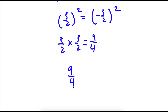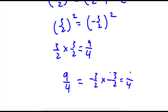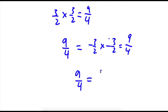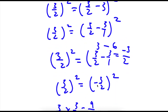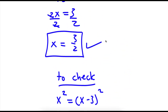So I have 9 over 4 is equal to negative 3 over 2 squared, which is equal to negative 3 over 2 times negative 3 over 2. Negative times a negative is a positive, so 9 over 4. So I have 9 over 4 is equal to 9 over 4, and this is right, so our solution is right.